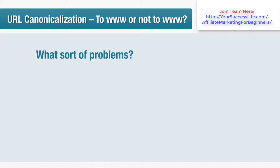Imagine you've got a couple of big juicy backlinks from sites with a PageRank of seven — .edu sites, relevant to your topic, linking to you using your keywords. It's fantastic. But now imagine that one is linking to www.yoursite.com...